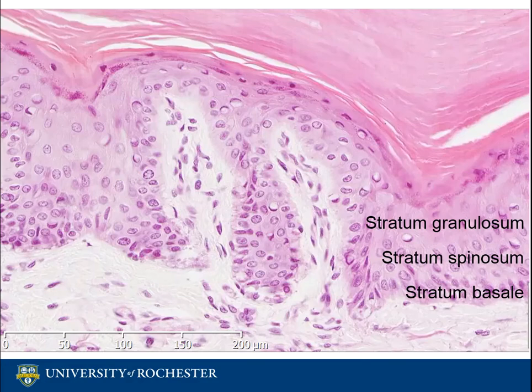The stratum granulosum, or granular layer, is composed of three to five layers of flattened cells with basophilic keratohyalin granules. In this layer, cells begin to die as they move further away from the nutrients located in the deeper tissue.